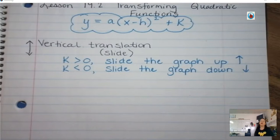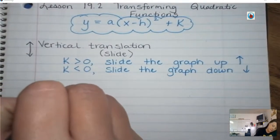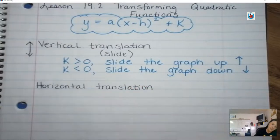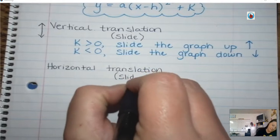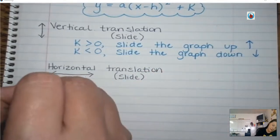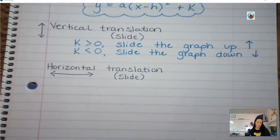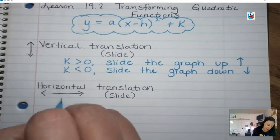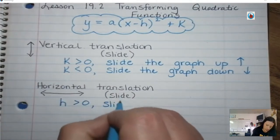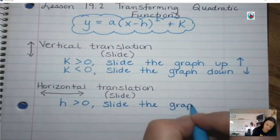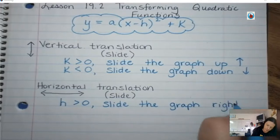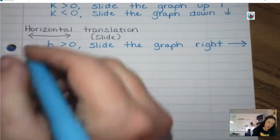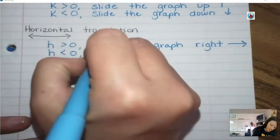Next, we can see if there's a horizontal translation. Again, a translation is a slide, and horizontal is left to right. We can tell if it moves left and right based on what the value of H is. If H is greater than 0, you're going to slide the graph to the right. And if H is less than 0, you're going to slide the graph to the left.